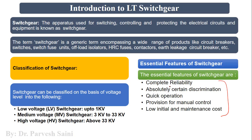Switchgear should operate quickly and have a fast response. As soon as any transient appears in the supply, the switchgear should operate quickly — it should trip and disconnect the low voltage circuit from the high voltage circuit as soon as possible.